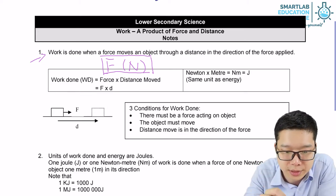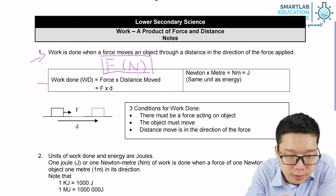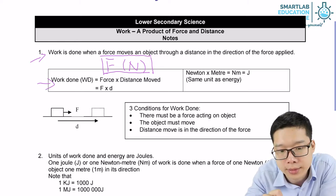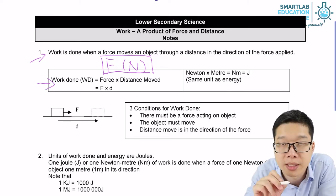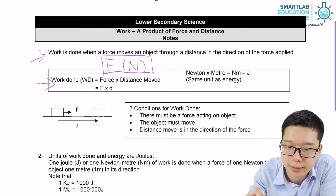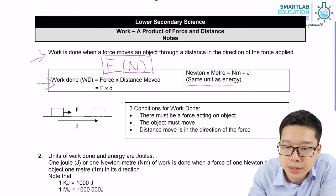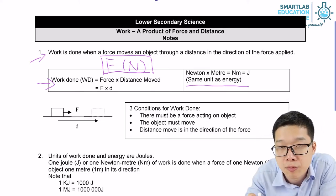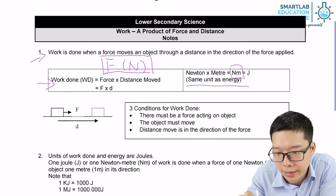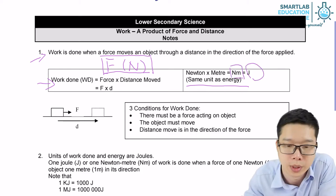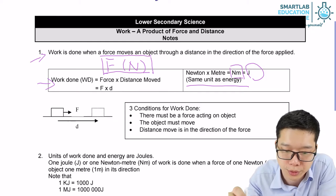From the definition itself, we can deduce that the formula is: work done equals force times distance moved. And the SI unit is Newton-meter. We call that joule as well. Short form, you can write J.